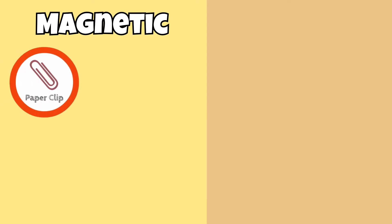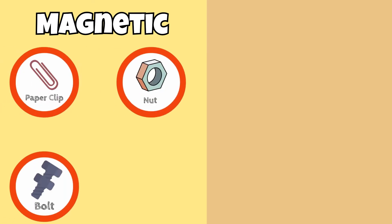Some items that are attracted to a magnet include paper clips, nuts, bolts, and nails.